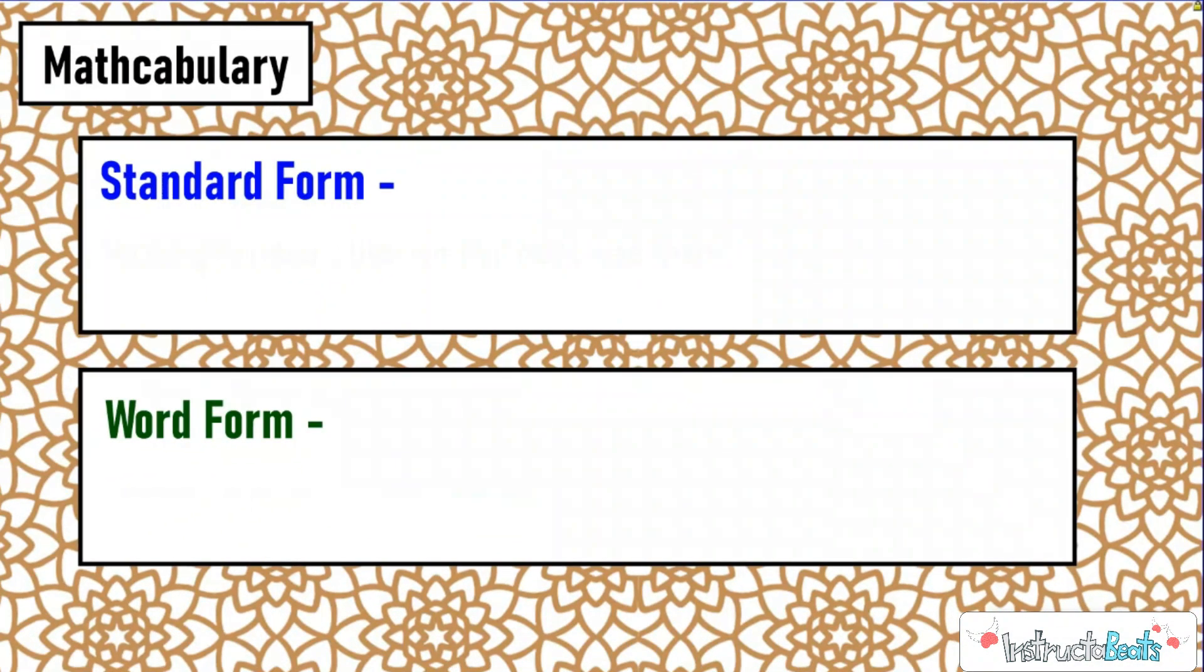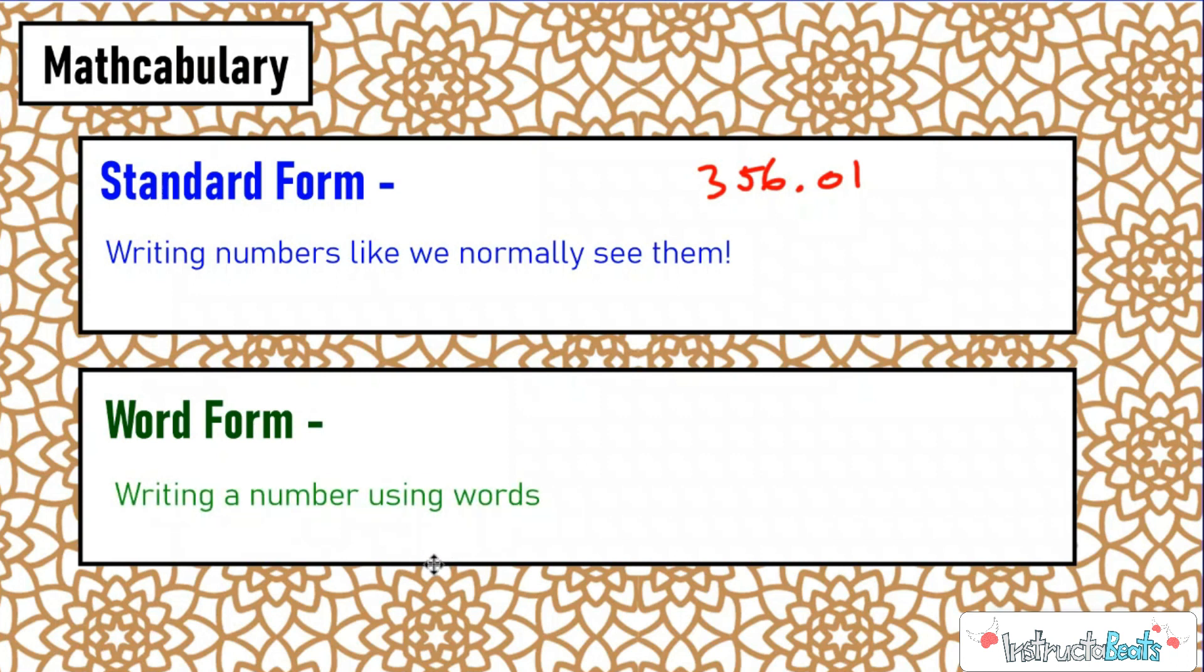So if you're with us for our expanded form lesson, you know what standard form is. Standard form is just writing numbers like we normally see them, like 356, or 356 and 100th, just writing it with our digit in our Place Value Street system like we've been doing all our lives. Word form is pretty simple, pretty self-explanatory. You're writing a number using words.